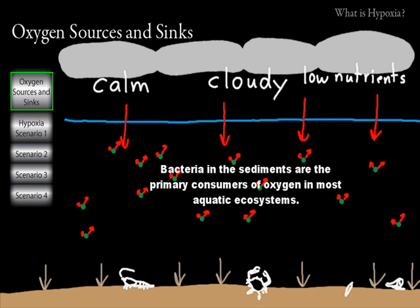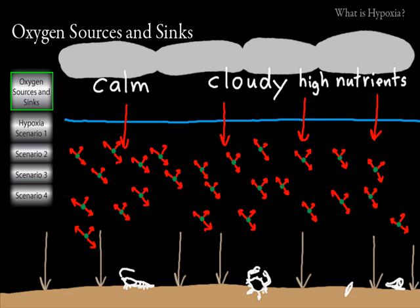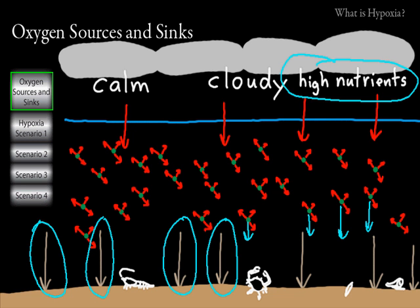One of the main things that affects oxygen consumption in the sediments is nutrients. In a low nutrient system, there isn't as much growth and therefore not as much death of organisms. When organisms die, they often sink to the bottom, and bacteria — as decomposers — break them down using oxygen in the process. So if not much is growing, not much is dying, meaning less decomposition and less oxygen consumption. In contrast, in a high nutrient system there is more growth and therefore more death, leading to larger oxygen consumption. The higher the nutrients, the more things are growing and dying, and the greater the decomposition and resultant oxygen consumption.